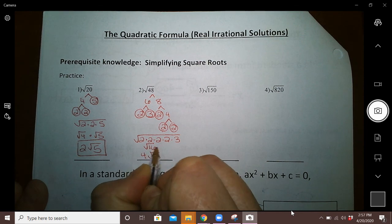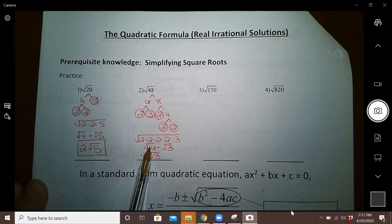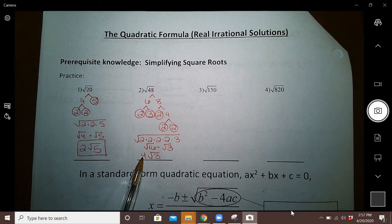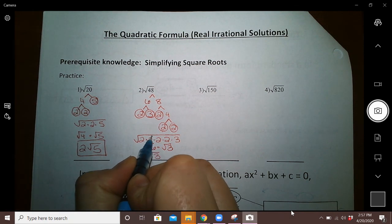So you've got the square root of 16 times the square root of 3, and the square root of 16 is regular 4. I like the method where you find your pairs.